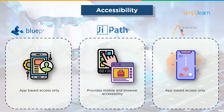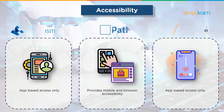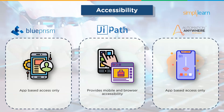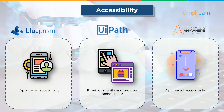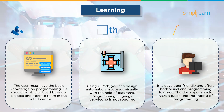Moving on to the next criteria, accessibility. Blue Prism allows app-based access only. UiPath on the other hand provides mobile and browser accessibility. Automation Anywhere also allows app-based access only.